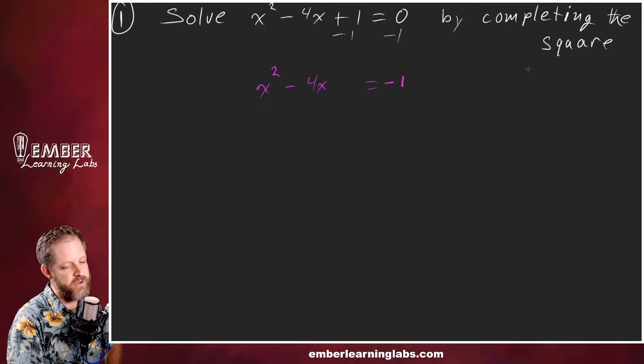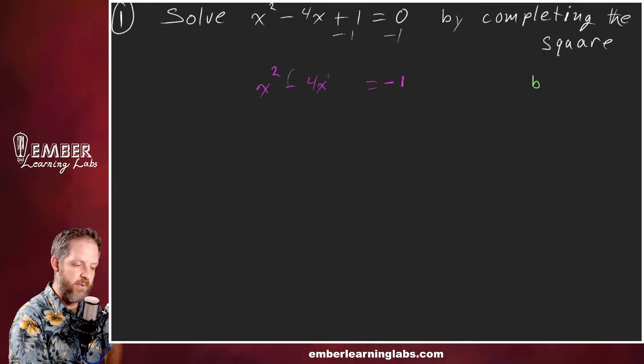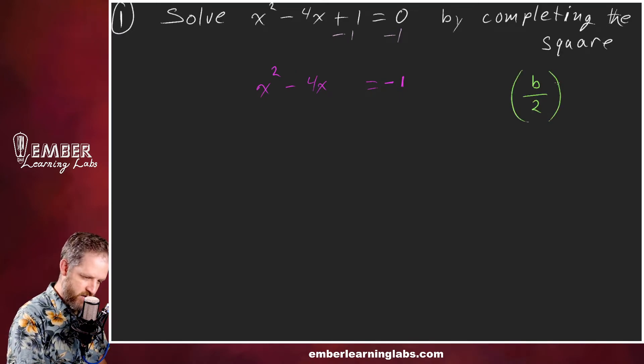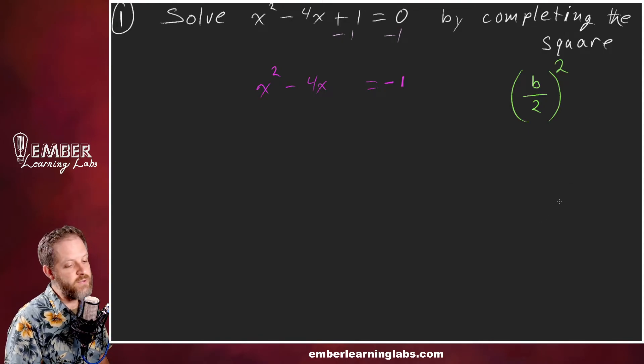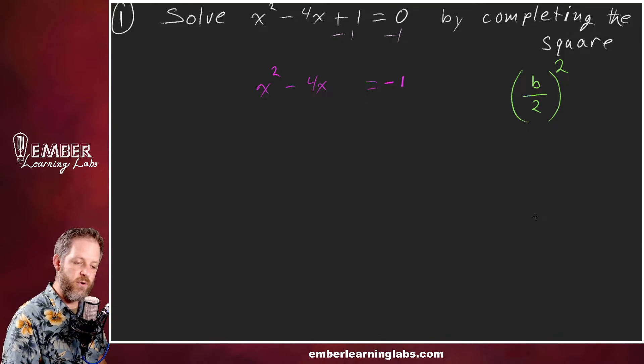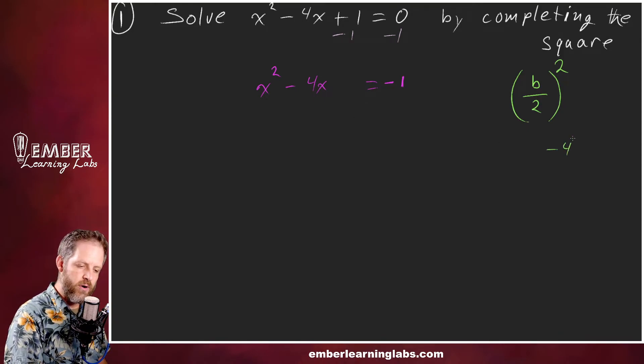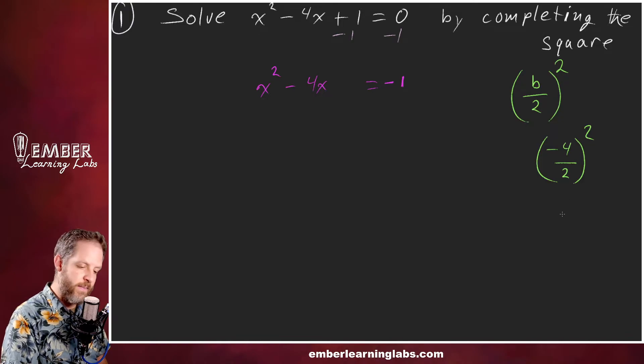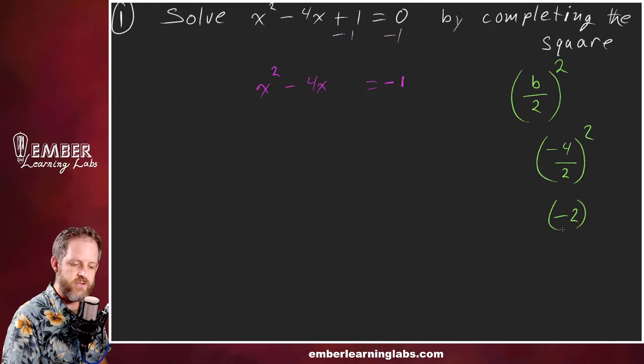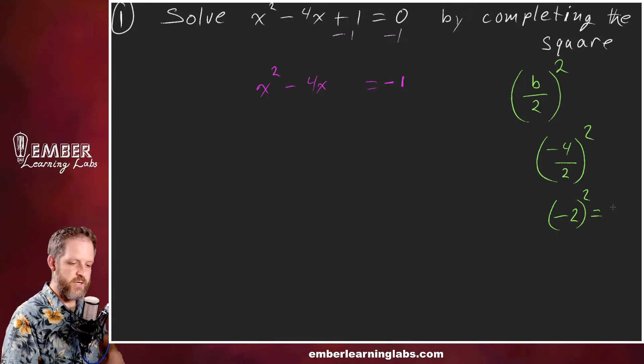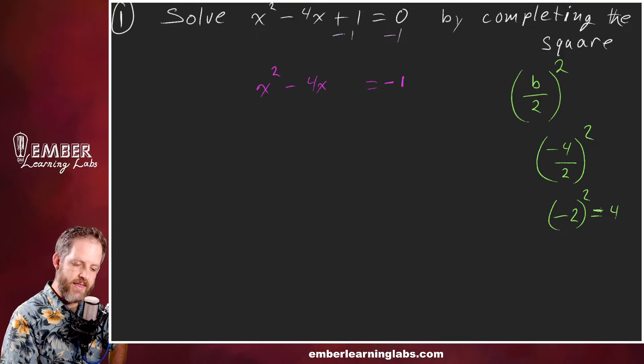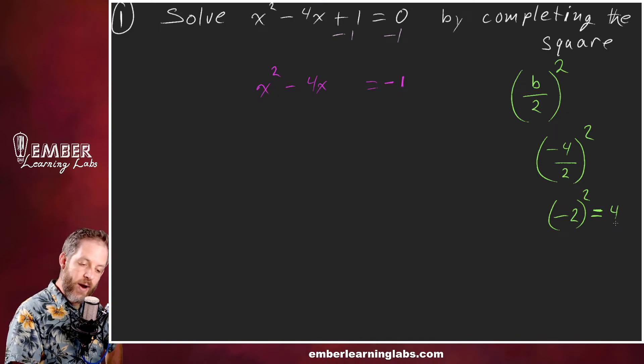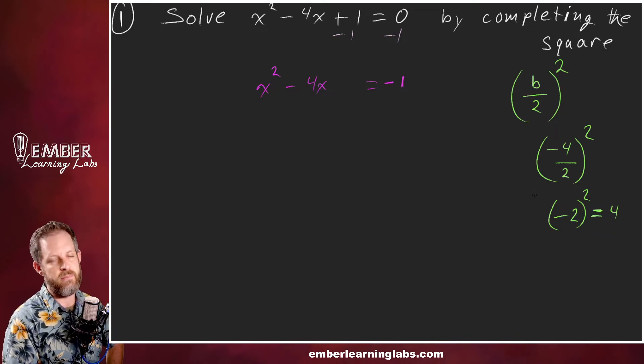What we're going to use is b, that would be the number in front of x, divided by 2 squared. That's what we're going to stick on there. In this case, b is negative 4, so we do negative 4 divided by 2 squared. Negative 4 divided by 2 is negative 2, and then squared gives us 4. I did write that intermediate step because we're actually going to need this number in a minute.